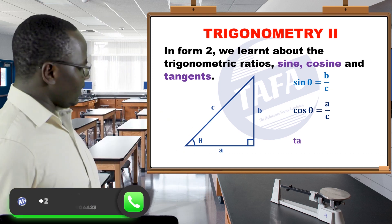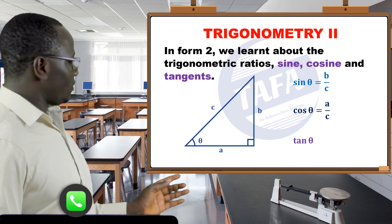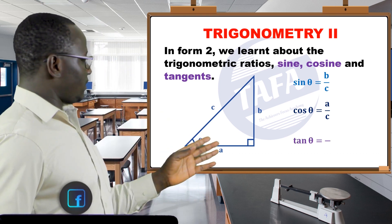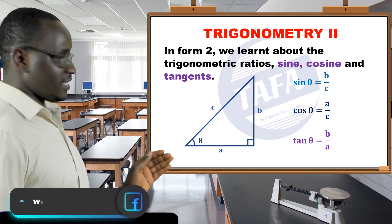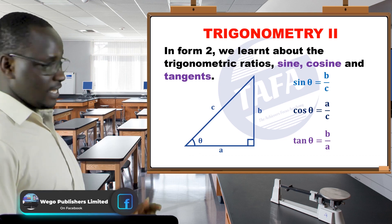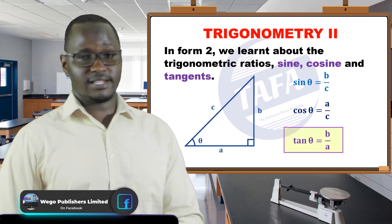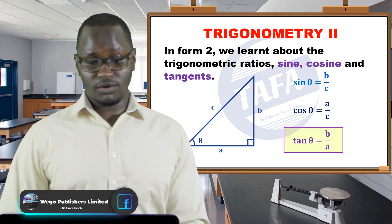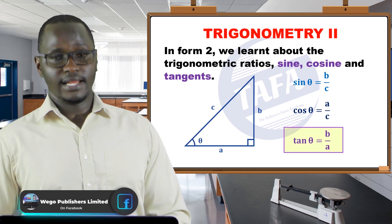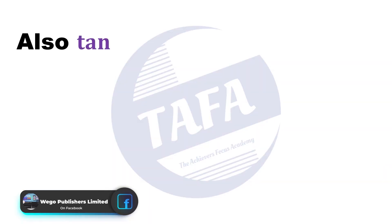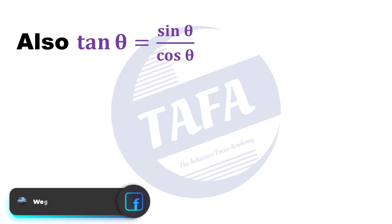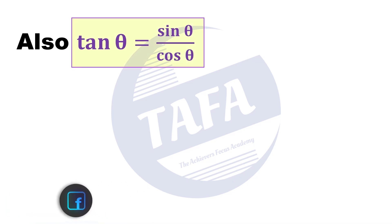tan θ is the opposite b over the adjacent a, so tan θ = b/a. We also learned that tan θ equals sin θ over cos θ.